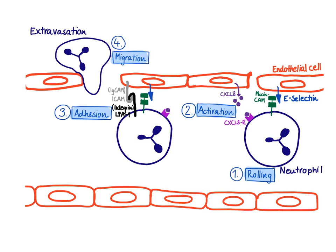As you know, neutrophils are always on call — they're circulating in the blood. Once the macrophage calls them, they need to leave the bloodstream to get to the site of infection. There are always four steps happening to get the neutrophil out of the blood.